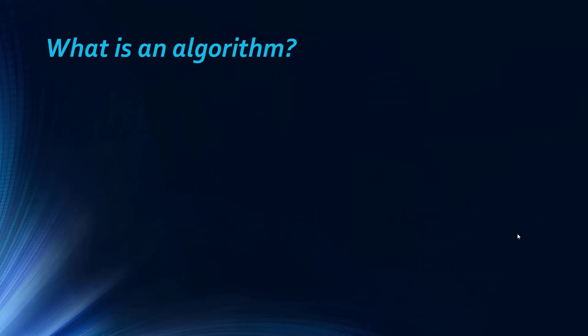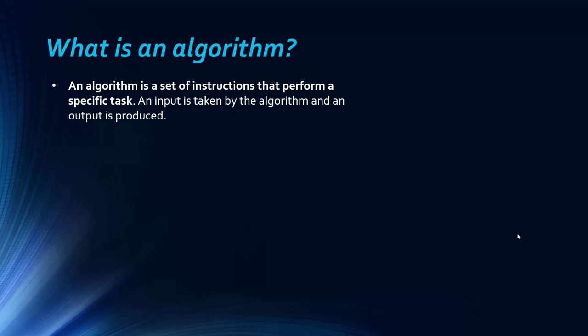So if we just begin by defining what an algorithm is, an algorithm is a set of instructions that perform a specific task. An input is taken and instructions do something to the input to produce an output. Really algorithms are there to solve problems. The three theoretical conditions we place on algorithms is that they're precise, well-defined and finite. Precise being that the instructions are very clear and straightforward to follow. Well-defined being that we have set inputs and set outputs. And finite being that we want to get a result at some point. We don't want an infinite loop.